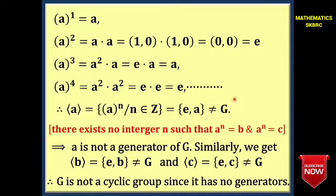Since G = {E, A, B, C}, A is not a generator of G. Similarly, ⟨B⟩ = {E, B} ≠ G, and ⟨C⟩ = {E, C} ≠ G. Therefore G is not a cyclic group, since G has no generators. Hence completed.